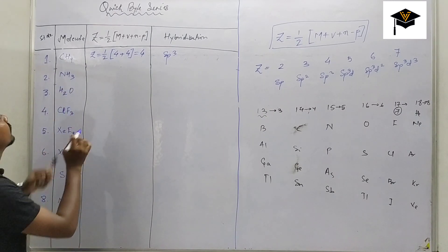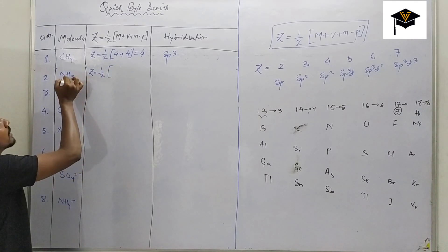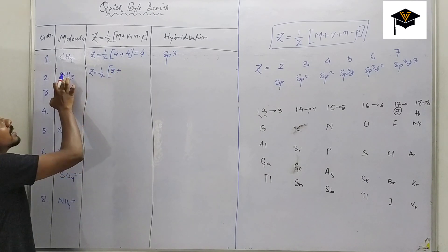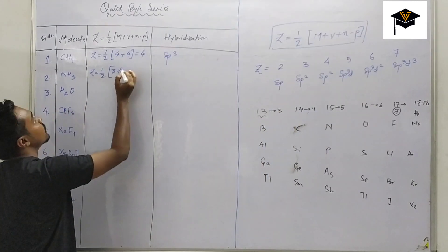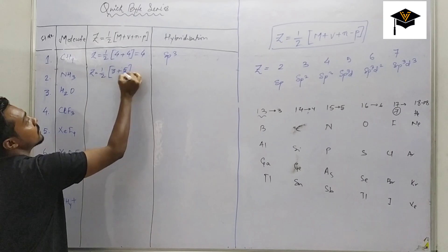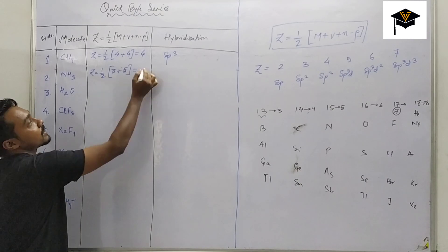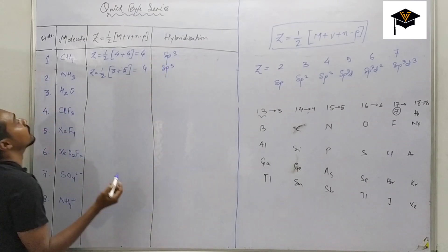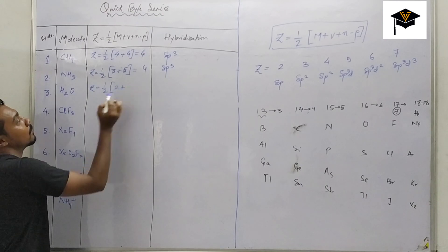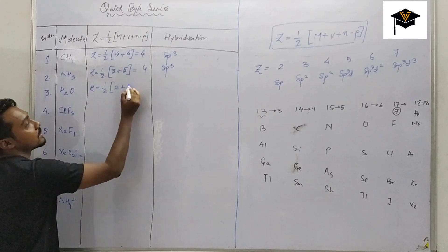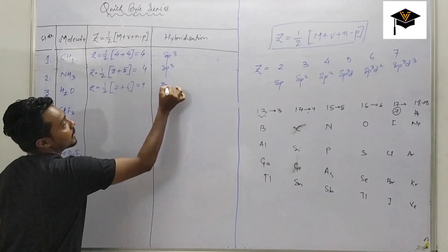For NH3: Z = ½ × (M + V). There are 3 monovalent atoms (hydrogen). Central atom is nitrogen (group 15), so valence electrons = 5. No charge. Z = ½ × (3 + 5) = ½ × 8 = 4. Hybridization is sp³. For H2O: Z = ½ × (2 + 6) — oxygen is the central atom (group 16, valence electrons = 6). Z = ½ × 8 = 4. Hybridization is again sp³.